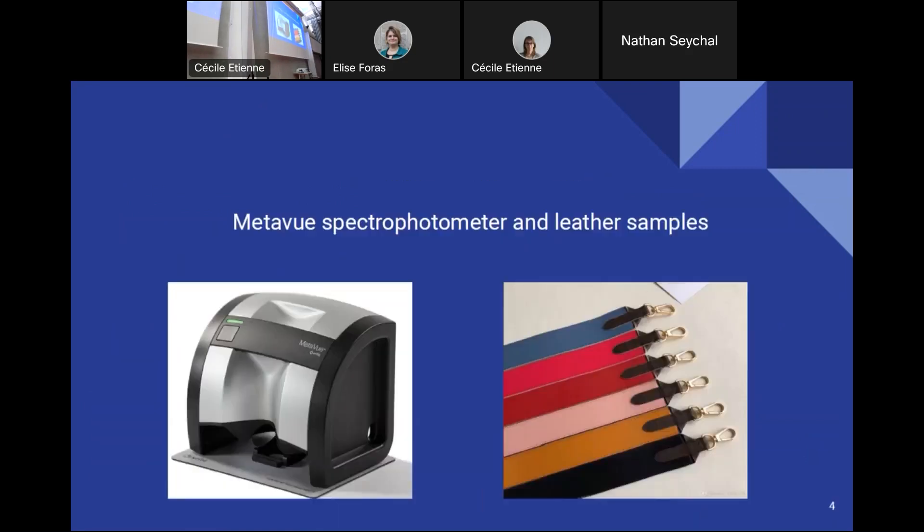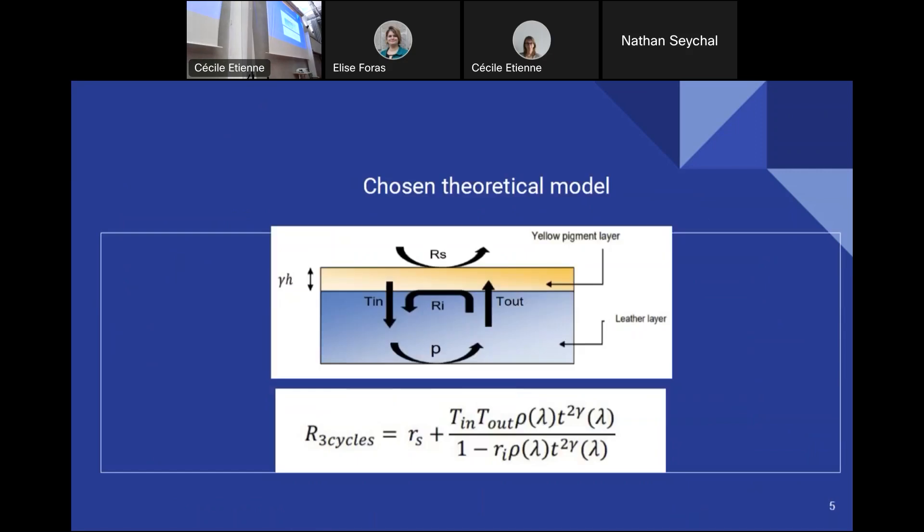And we made several measurements on different areas to check the homogeneity of the leathers. And after we made all these optical measurements, we started thinking about a theoretical model matching our observations best. And we finally chose an analytical model describing how light travels in the following structure: a layer of leather covered with a layer of yellow pigment.